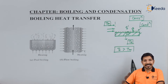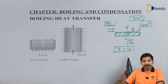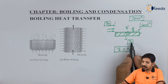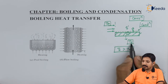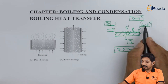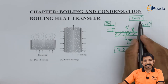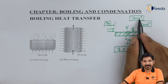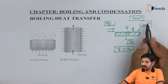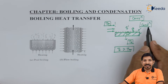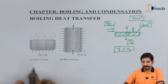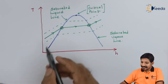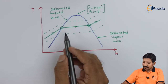Now the question that needs to be asked is: up to what temperature will this conduction and convection take place? To answer this, we need to understand the T-s diagram.